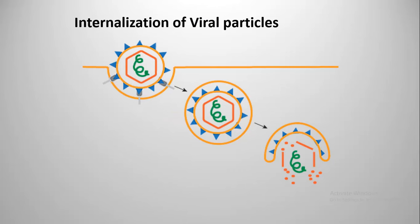The first step is adsorption of the viral particles on the surface of the cells. Then secondly, internalization of the viral particle. The viral particles bind to glycoprotein molecules on the cell surface, which allow their internalization inside the cell. Once inside the cell, they shed off their capsid and envelope, thereby releasing the genetic material — in this case DNA — inside the cytoplasm.